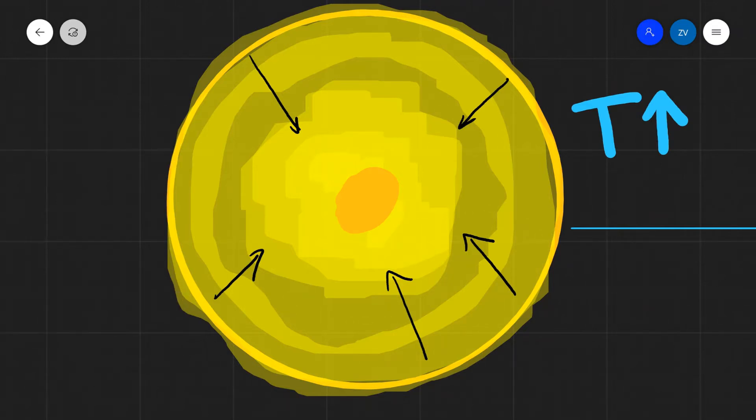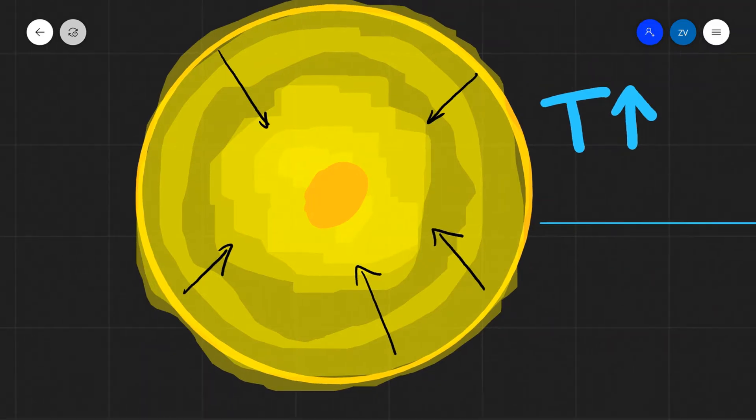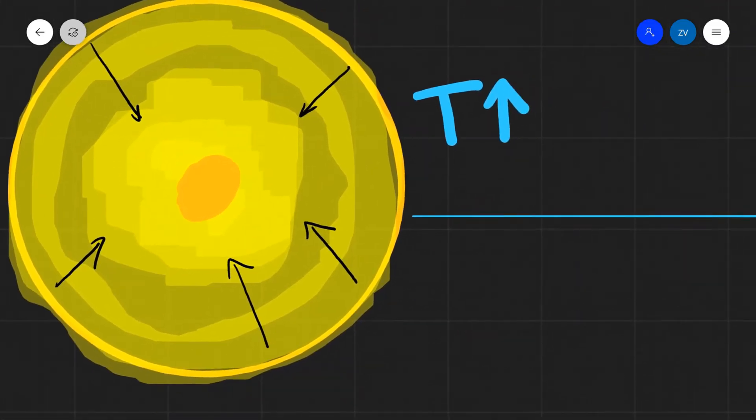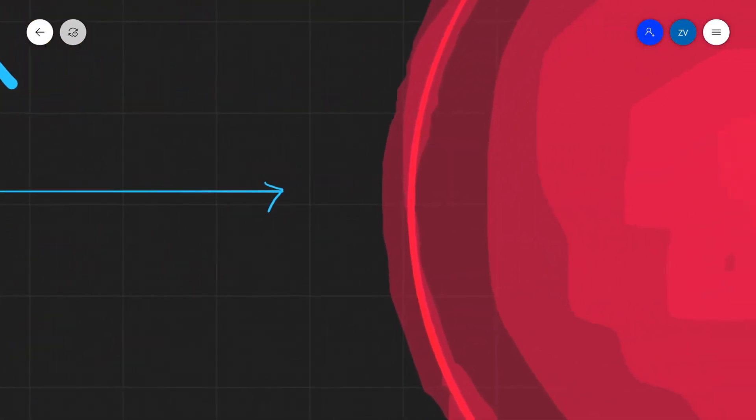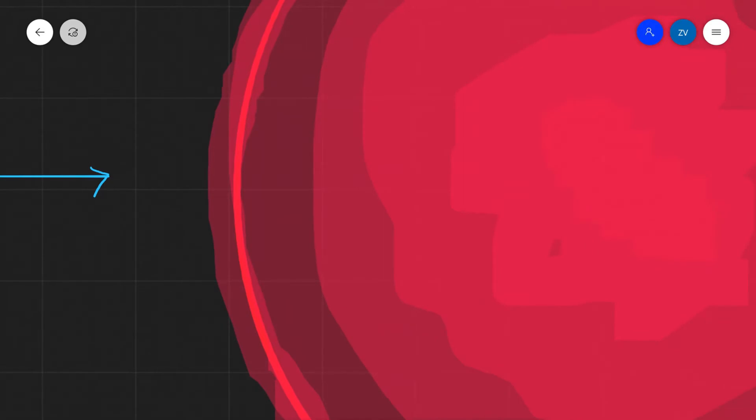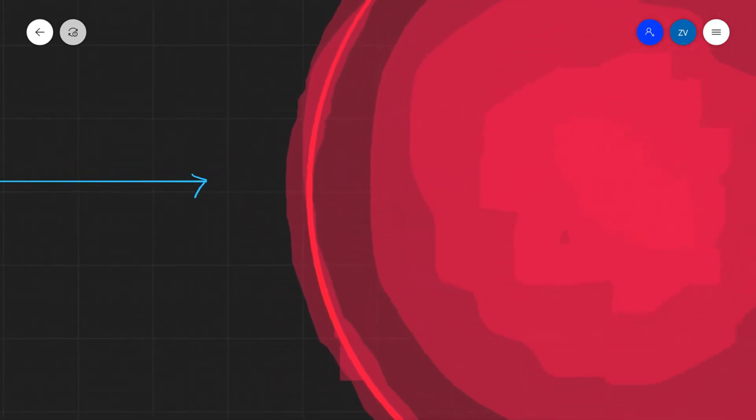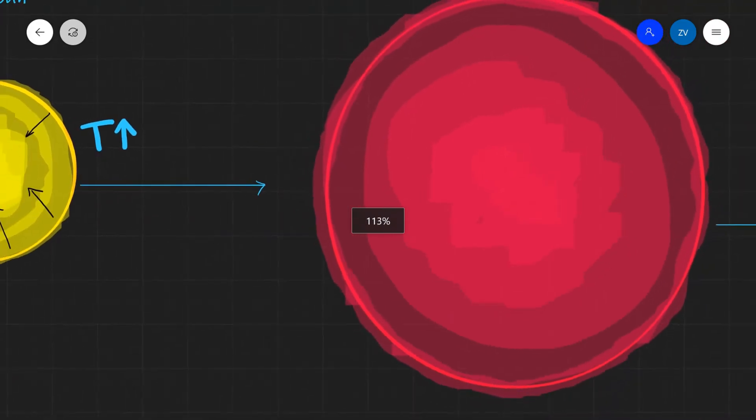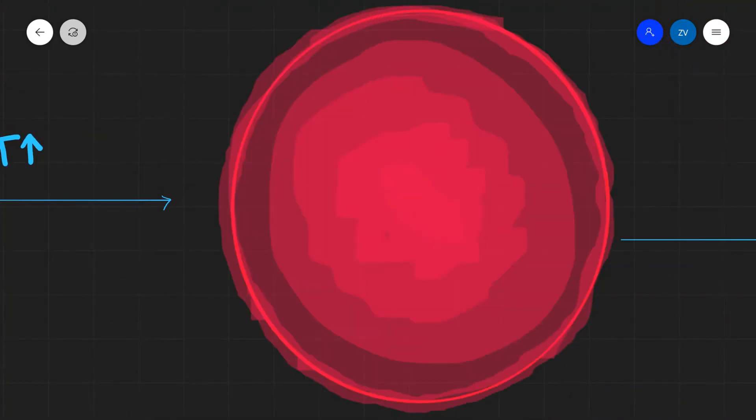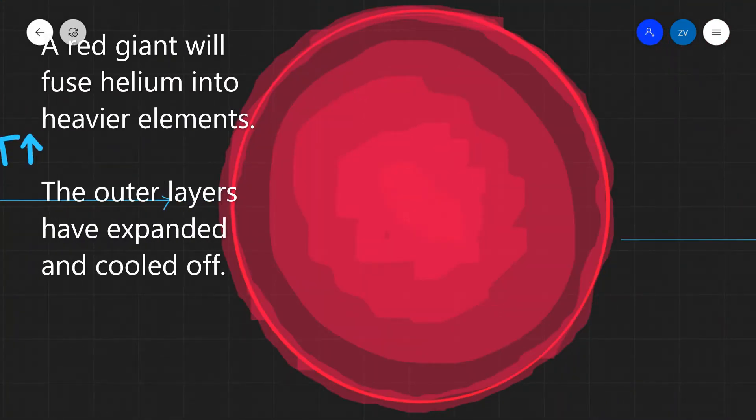Because the core is now over 100 times hotter, the outer layers of the star start to expand and the star forms a red giant. The very outer layers have expanded and cooled off, and that's why the star has changed color and is now a red giant.